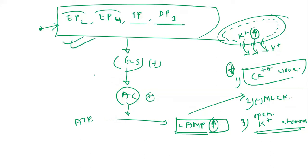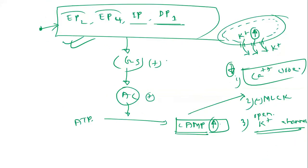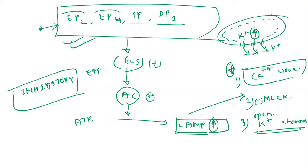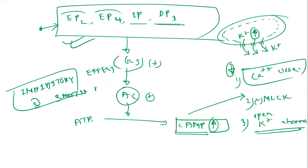By this mechanism, the Gs-coupled receptors (EP2, EP4, IP, DP1) show an inhibitory effect, or smooth muscle relaxation — the reverse of the Gq-coupled receptors. In the case of smooth muscle, this results in relaxation, meaning vasodilation or gastrointestinal muscle relaxation, etc.